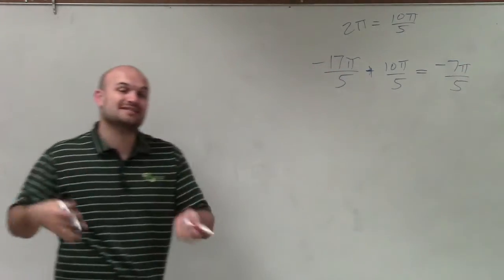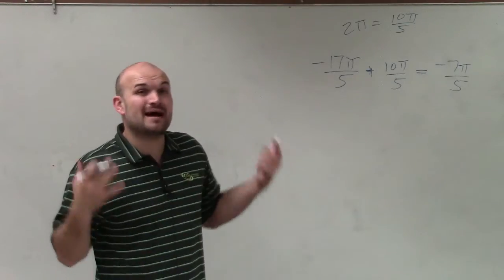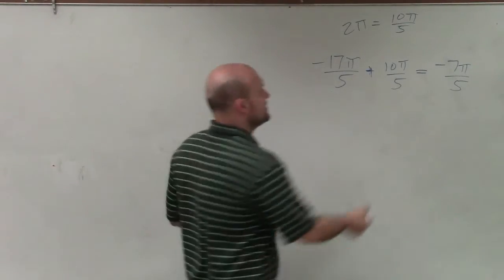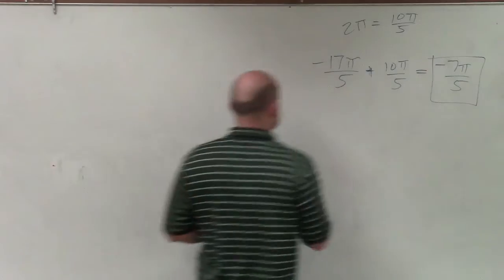Now if I was to add a positive 10 pi over 5 again, my angle would now be positive. So therefore, this is my smallest coterminal angle.